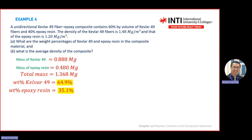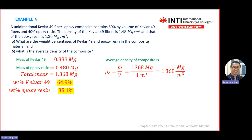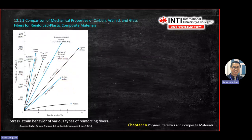Once you have the total mass, average density equals total mass divided by total volume: 1.368 Mg divided by 1 m³. That is your average density of the composite.